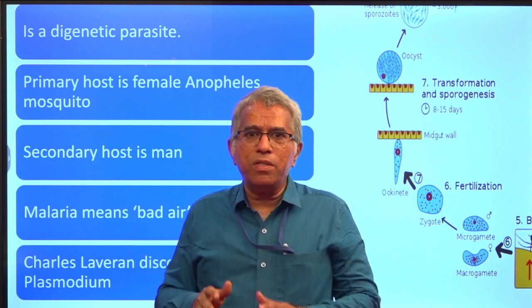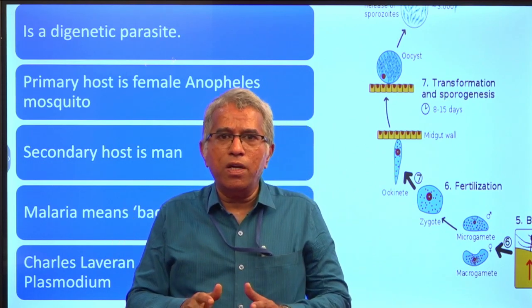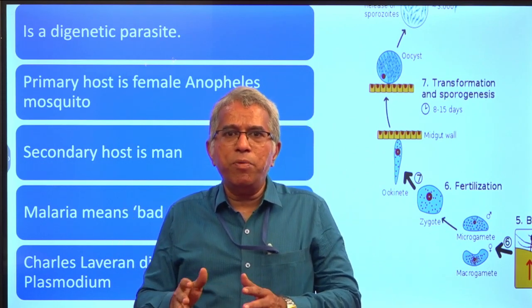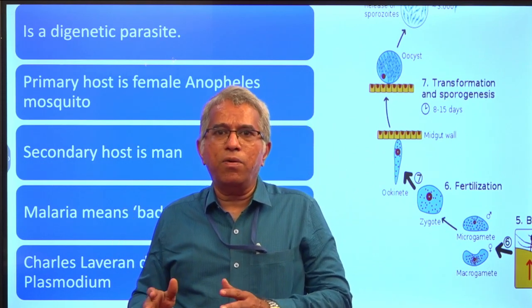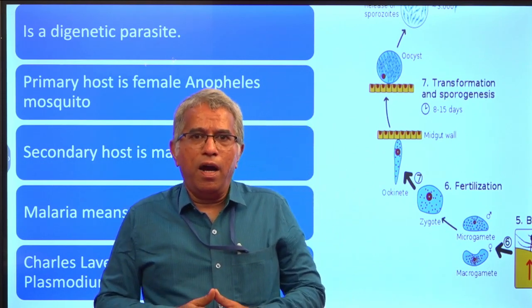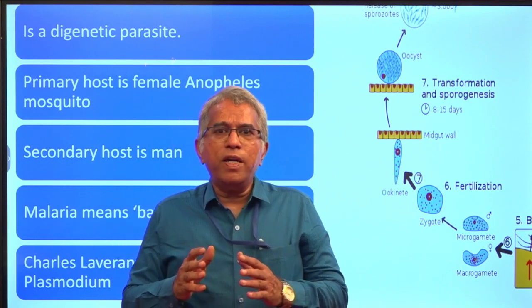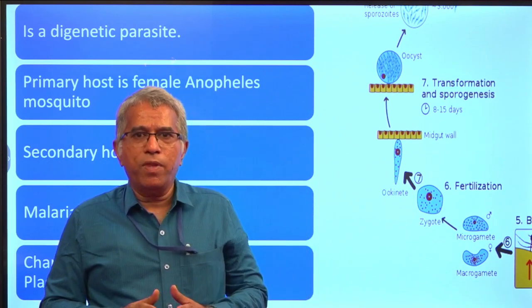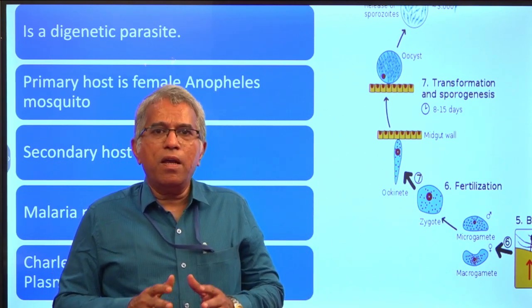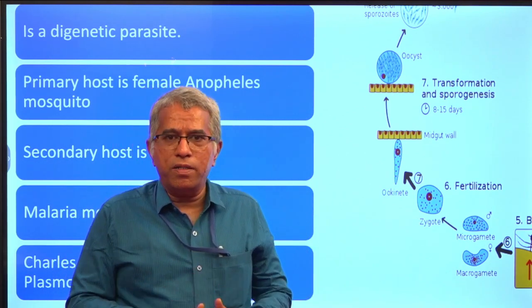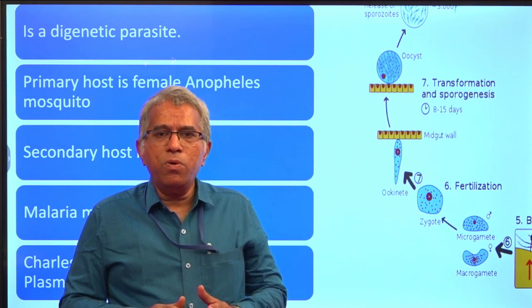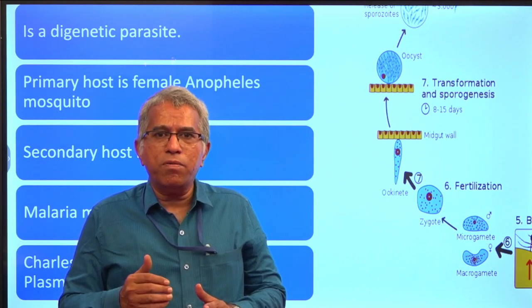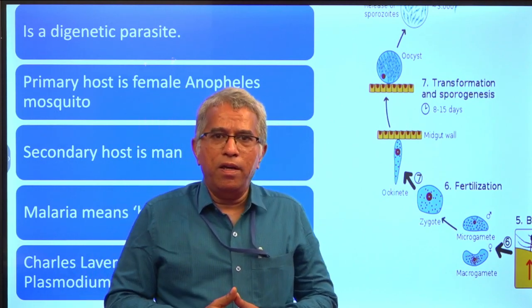Female Anopheles mosquito is the primary host, whereas human being is the secondary host. Coming to the infective stages of Plasmodium, they are called sporozoites. Sporozoites are the infective stages of Plasmodium to human beings.